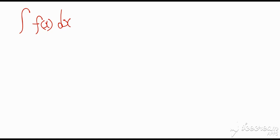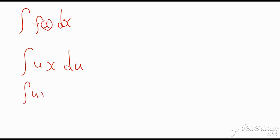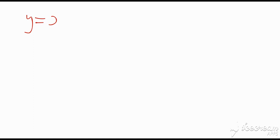When writing an integral, we must indicate what we are integrating with respect to. The 'dx' means we are integrating f(x) with respect to x. To see why this matters, consider the integral of u times x: with two variables, if we write 'du' we treat x as a constant and u as the variable, whereas writing 'dx' means u is the constant and x is the variable. It is imperative to indicate what we are integrating with respect to.